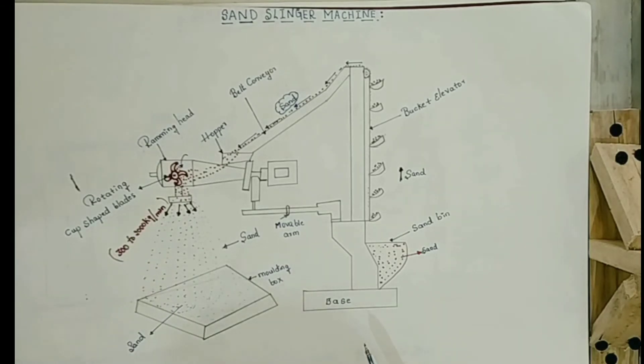So, let's discuss about basic construction of Sand Slinger Machine. Sand Slinger Machine consists of a base where whole system is mounted on the base and it consists of a sand bin which consists of sand and there is a bucket lift elevator which lifts the sand from the sand bin to the conveyor bed.